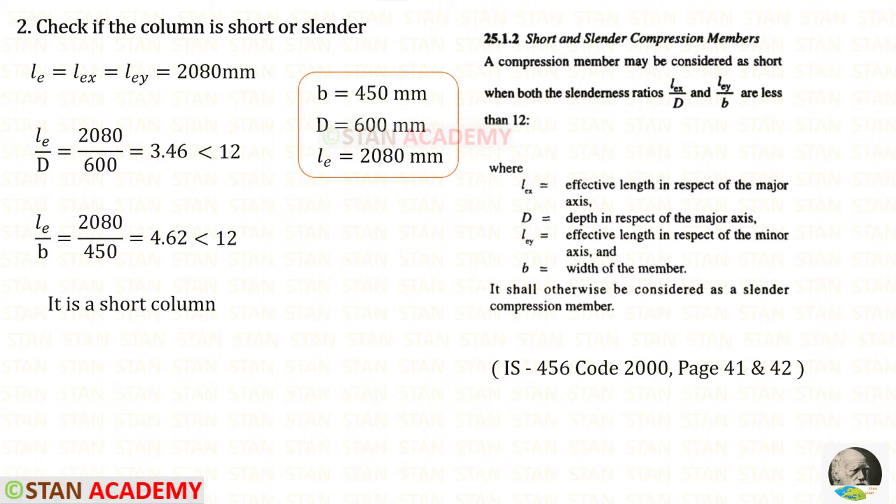Now we are going to check if the column is short or slender. Let us open this book and see the page number 41. In this page we have to see this clause. It states that a compression member may be considered as short when both the slenderness ratios L.E.x upon D and L.E.y upon B are less than 12. In our case L.E.x and L.E.y will be equal to the effective length L.E which is 2080 millimeter. For L.E upon D we will get 3.46 which is less than 12. For L.E upon B we will get 4.62 which is also less than 12. So it is a short column.